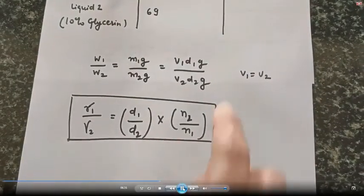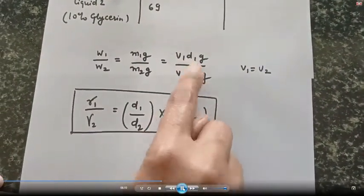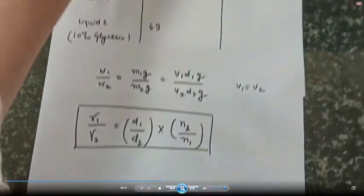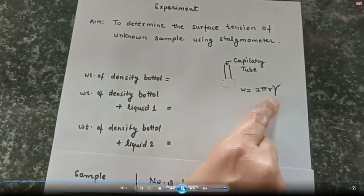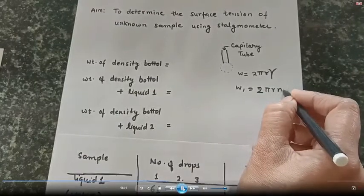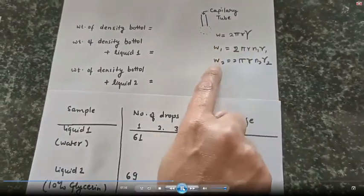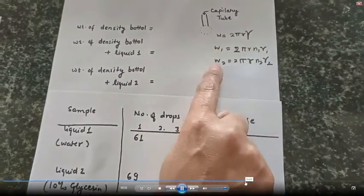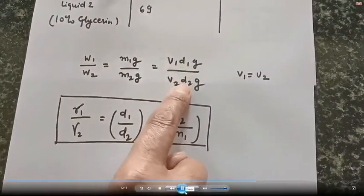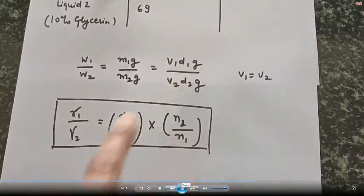Since for both cases the volume is the same, V₁ = V₂, so V and g cancel out, giving W₁/W₂ = d₁/d₂. For n number of drops: W₁ = 2πr × n₁ × γ₁, and W₂ = 2πr × n₂ × γ₂. Therefore W₁/W₂ = (n₁γ₁)/(n₂γ₂), because 2πr cancels. So n₁γ₁/(n₂γ₂) = W₁/W₂ = d₁/d₂.